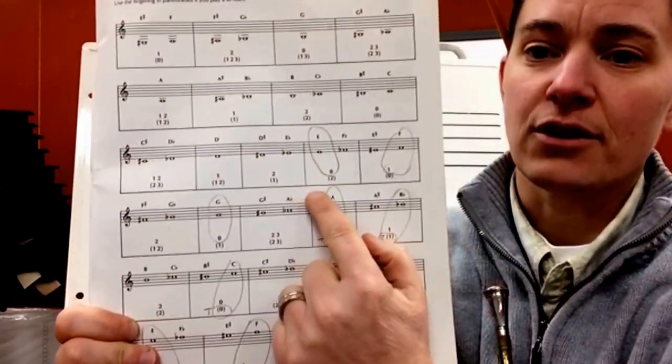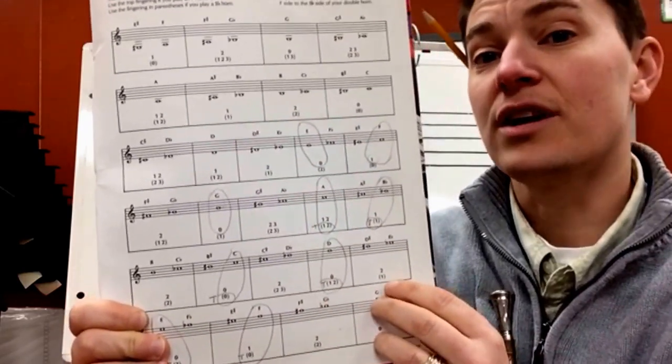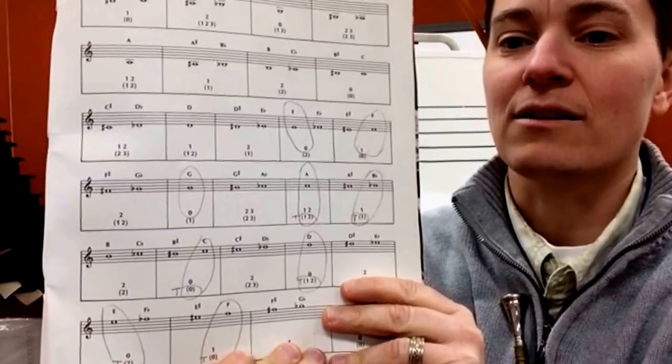The single horn fingerings are on the top, and the double horn fingerings are underneath of it in parentheses. That means you're going to push your thumb and the fingerings.